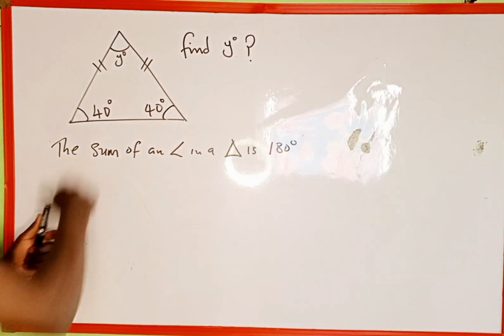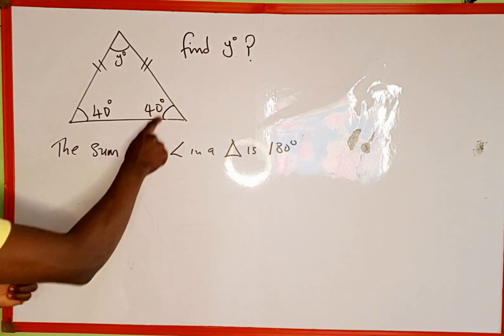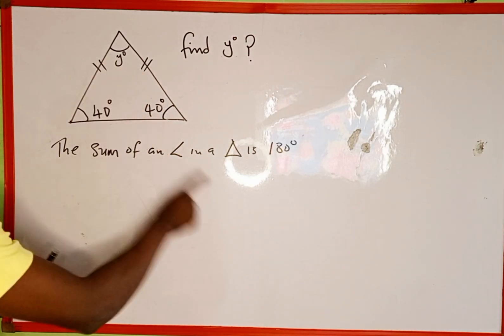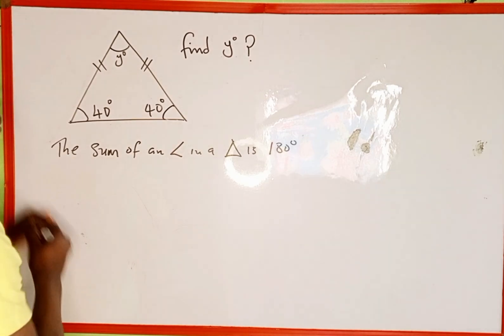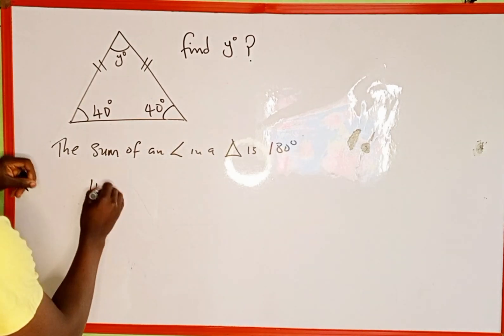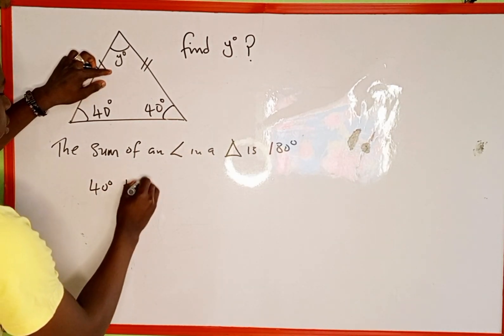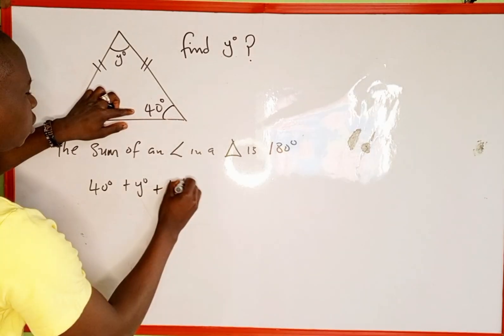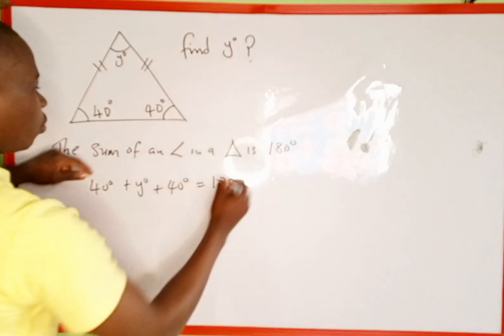So what we are going to do to get the value of y here, the missing angle, we are going to sum all these angles together and equate it to 180 degrees. So this is going to be 40 degrees plus y degrees plus 40 degrees equals 180 degrees from this theorem.